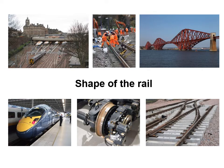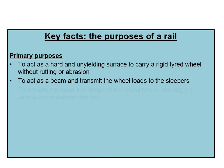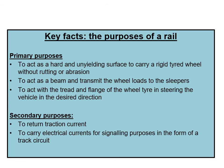Now we're going to have a close look at the shape and geometry of the rail section. The primary purpose of the rail is to act as a hard and unyielding surface to carry a rigid-tyred wheel vehicle without rutting or abrasion. It also acts as a beam and transmits the wheel loads to the sleepers. It also acts with the tread and flange of the wheel tyre in steering the vehicle in the desired direction.